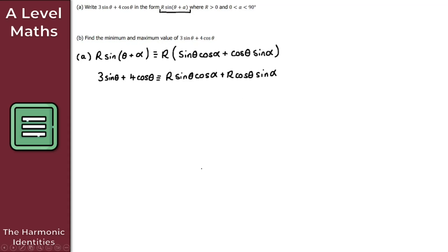Now we equate coefficients. The sin(θ) term gives us r·cos(α) = 3 — call this equation 1. The cos(θ) term gives us r·sin(α) = 4 — call this equation 2.